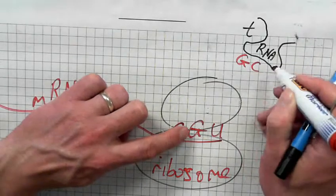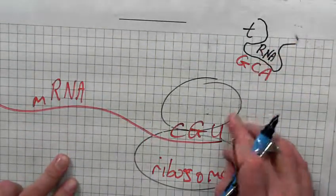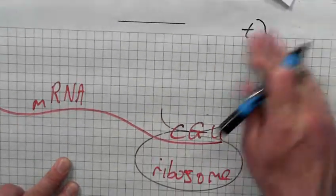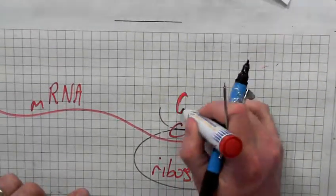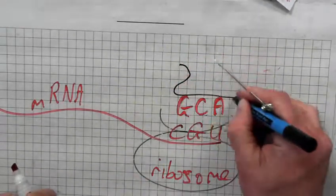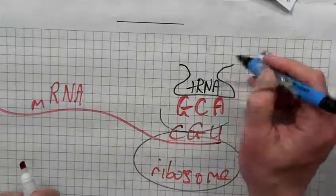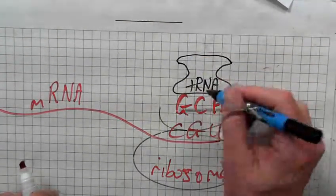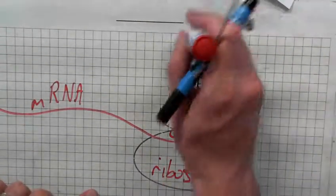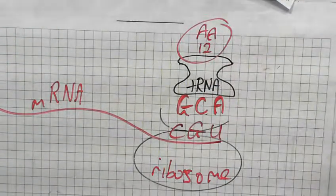G. C and? A. So this one will come in. G, C and A. And this tRNA molecule will be carrying a specific amino acid. So let's say it's AA12. Alright.